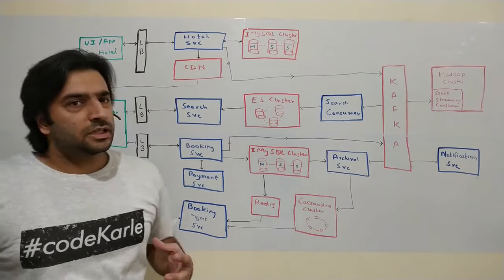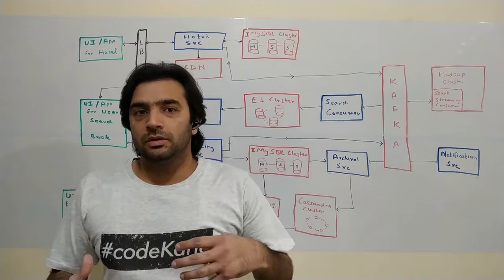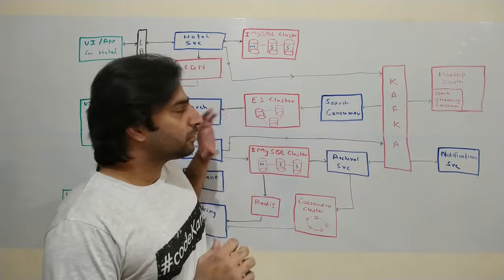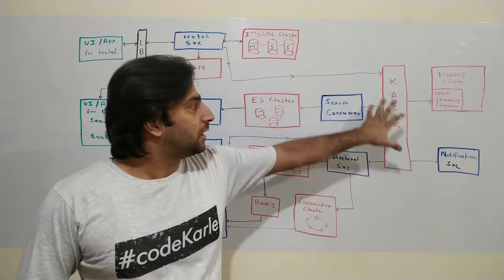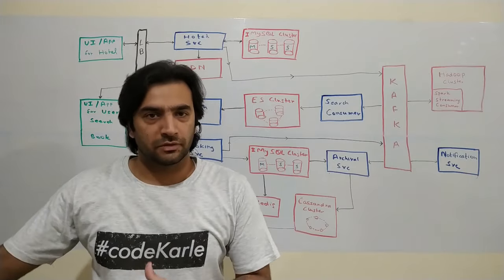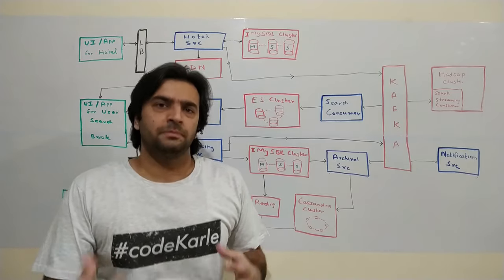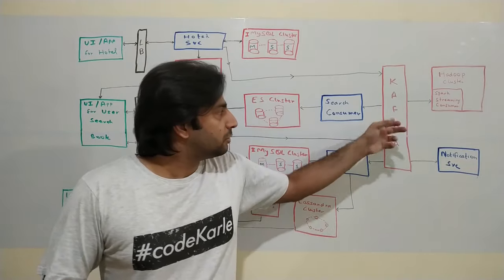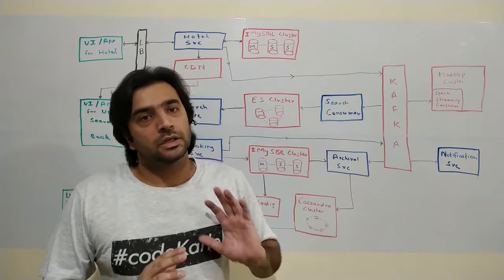Each time a modification happens to a hotel — for example, a new hotel comes in — we want to propagate this to the search piece. I'll use a Kafka here. Each modification within the hotel service flows through a Kafka cluster, and there will be multiple consumers sitting on top of this cluster which will populate their data stores for serving search traffic. One of those consumers is the search consumer.